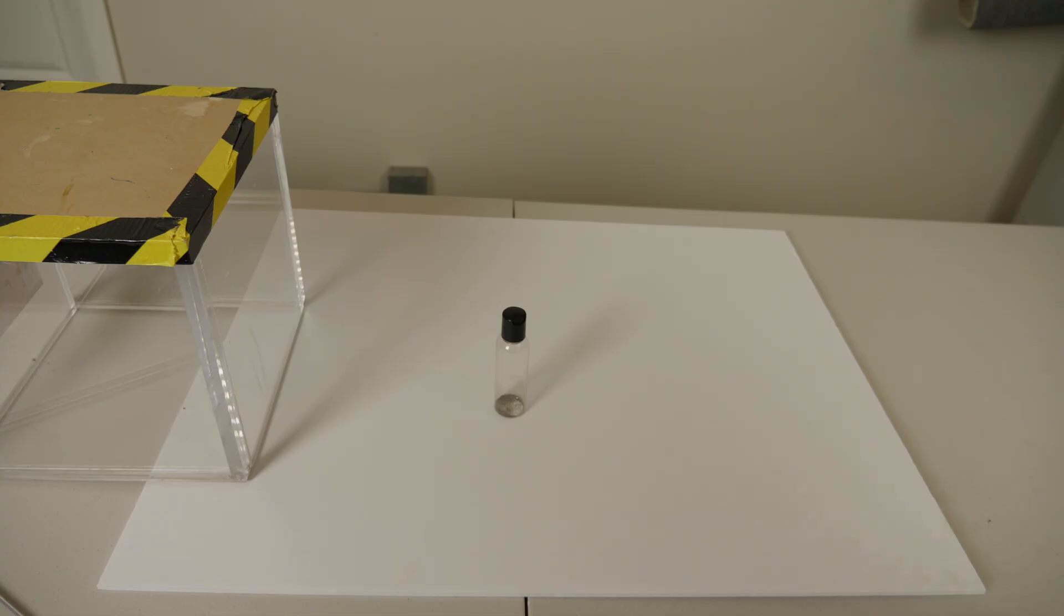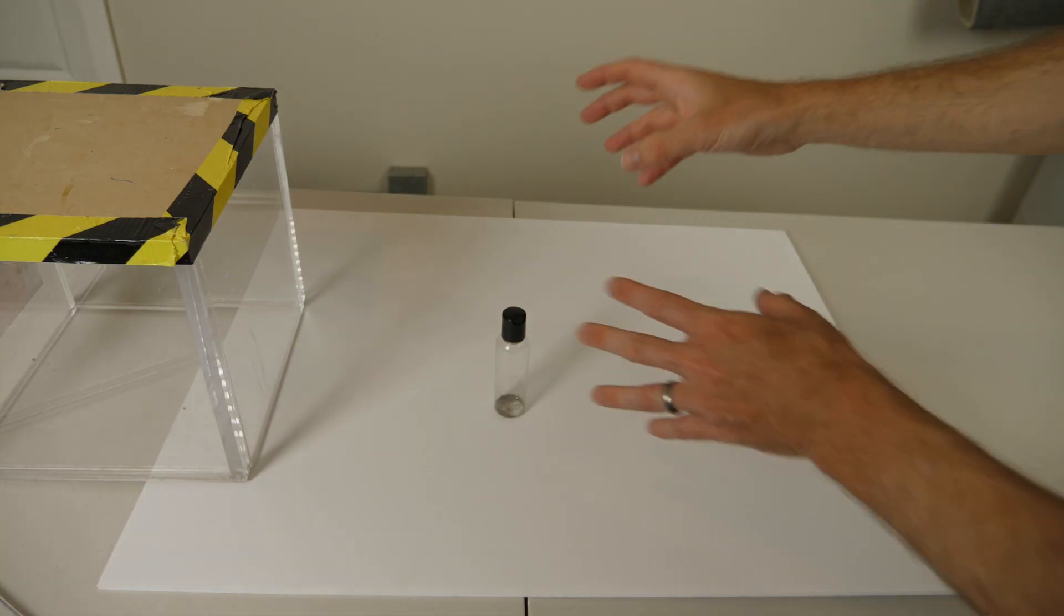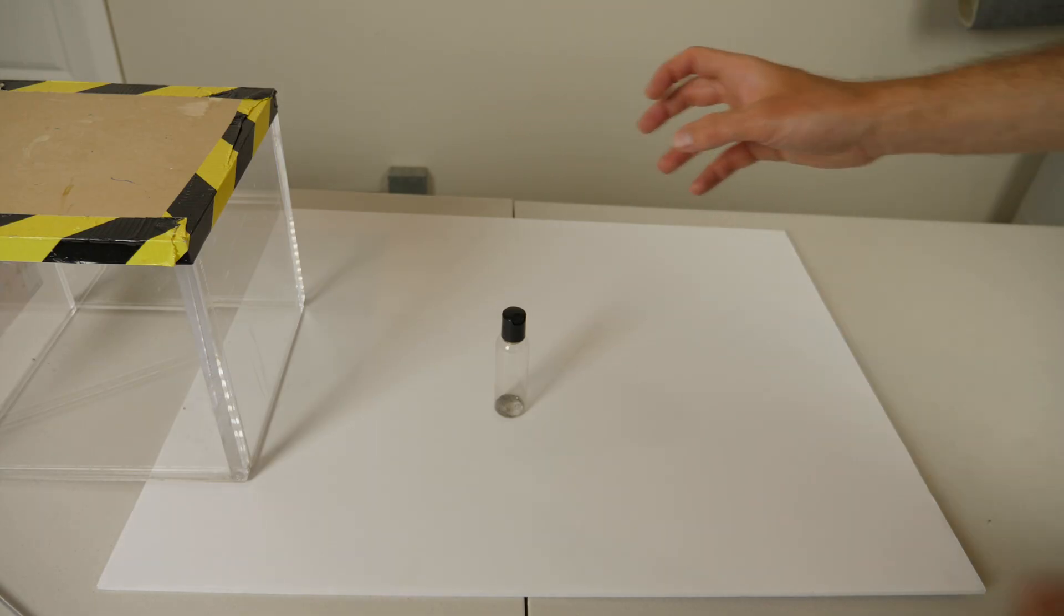The only literature I could find on the terminal velocity of an ant referenced around 3.7 miles per hour. So this is much faster than that reference there. But probably because the harvester ant is a pretty big ant.